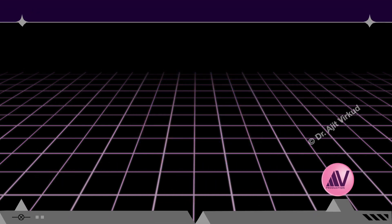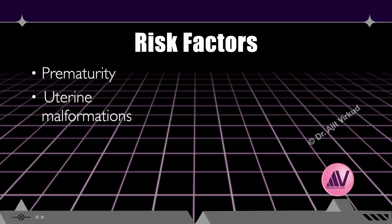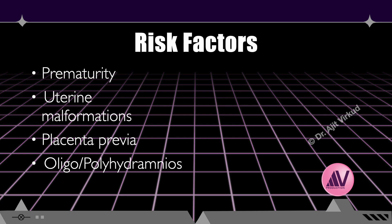Breech presentation is a multifactorial condition. Prematurity is the single strongest risk factor — the earlier the gestational age, the higher the incidence. Uterine anomalies such as bicornuate, septate, or didelphys uterus and uterine fibroids can distort the uterine cavity and prevent normal fetal rotation. Low-lying placenta or placenta previa can physically obstruct the fetal head. Abnormal amniotic fluid volumes — oligohydramnios or polyhydramnios — can restrict or permit excessive fetal movement, affecting presentation.